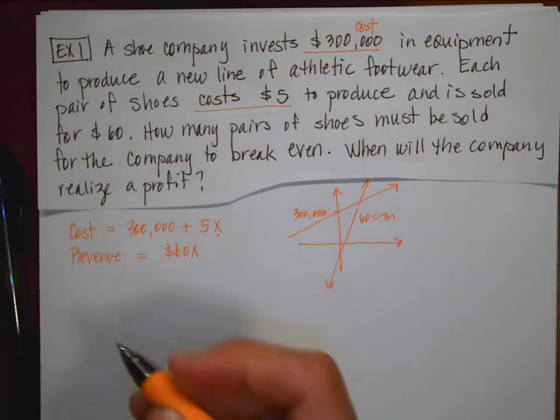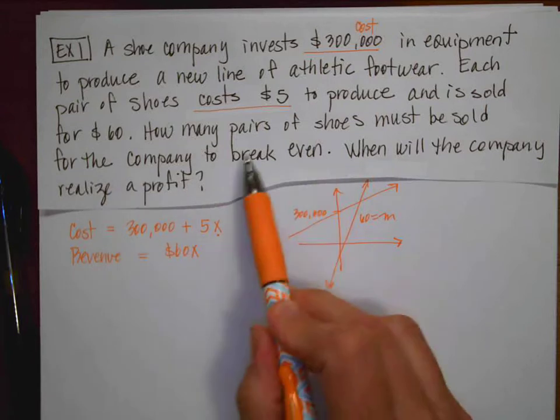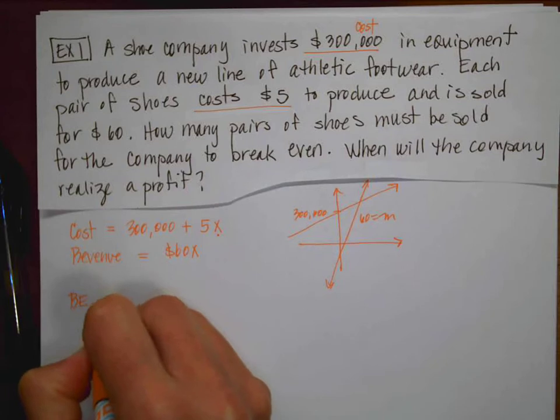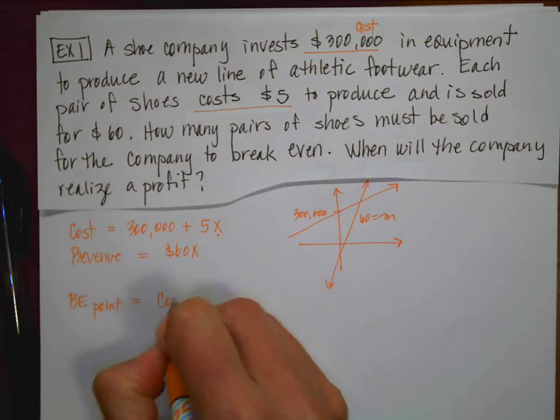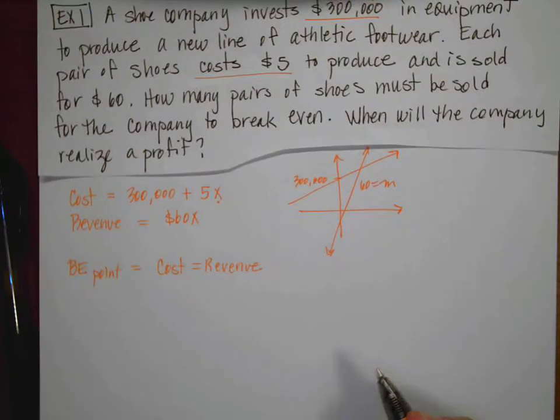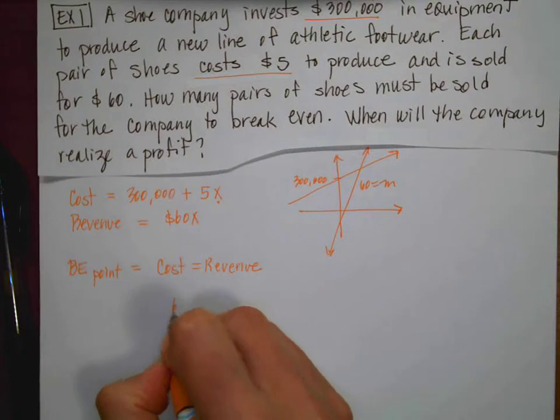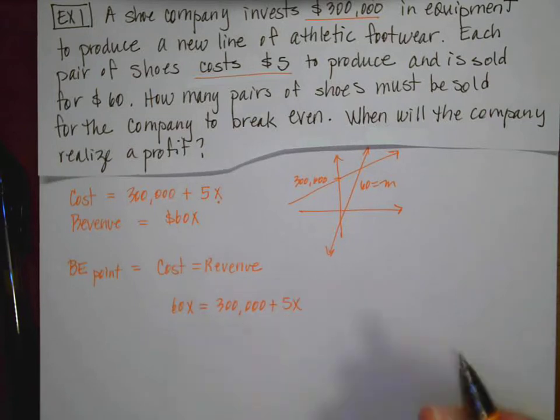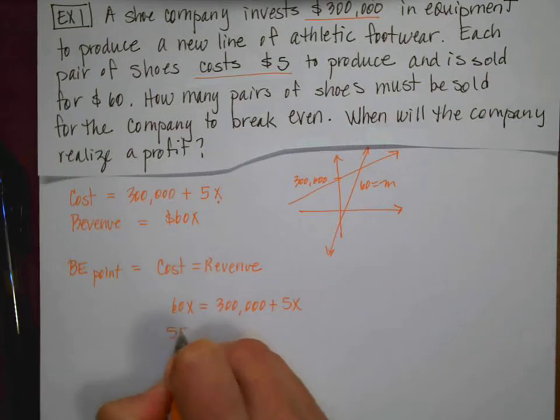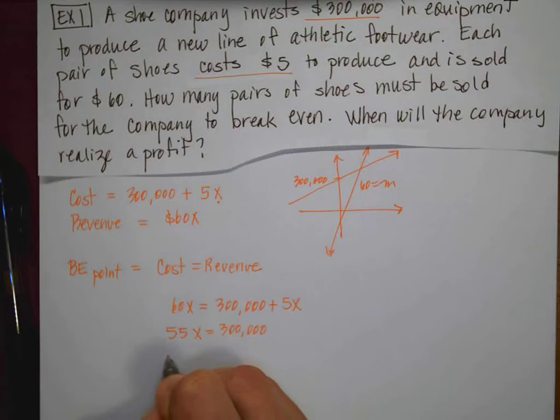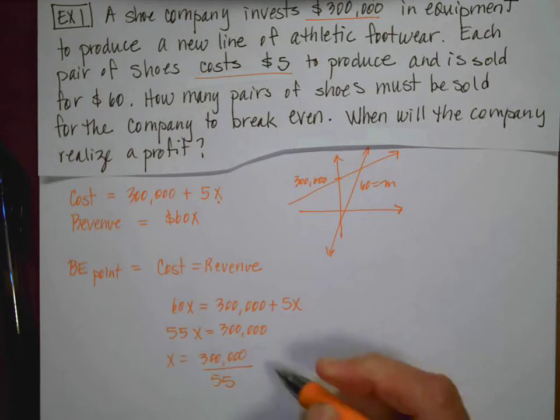So I would recommend that you just do the math. So I want to know, the first question is, how many pairs of shoes to break even? So for the break even point, that is going to be where the cost is equal to the revenue. So I'm going to set the two equations equal and I'm going to solve. So I have 60x is going to equal $300,000 plus 5x. I'm going to get 55x is $300,000. And then if I divide,